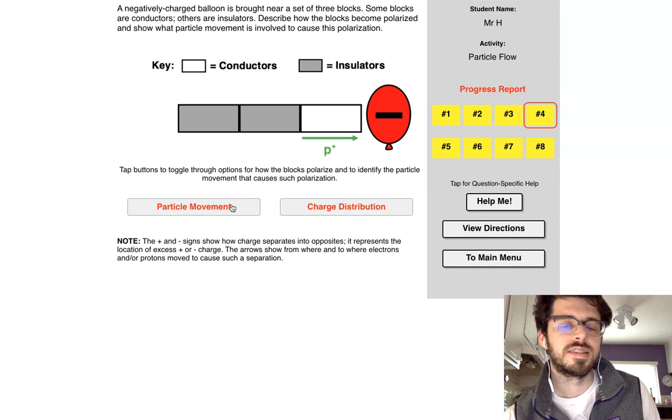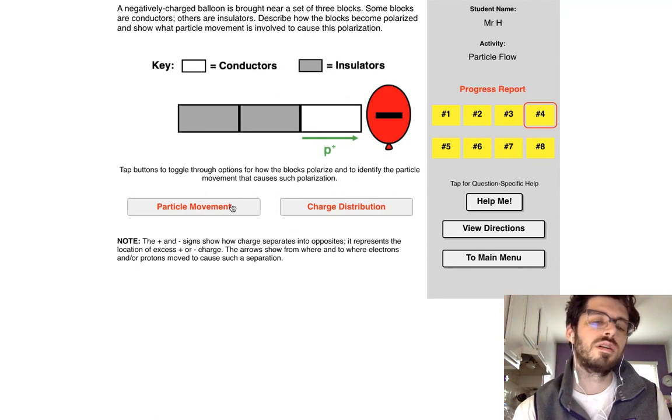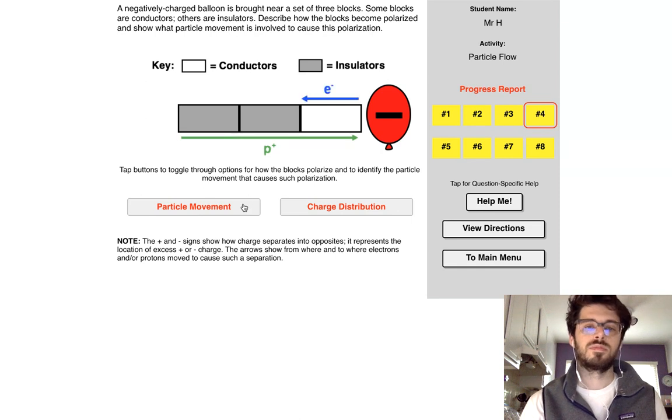The only thing that's going to be flowing is the electrons. If you toggle through these, you're going to notice there's these green arrows where it shows protons are flowing. If it ever says protons are flowing, that's not correct. This one has electrons flowing, but again it has a green arrow saying protons are moving. Not correct.